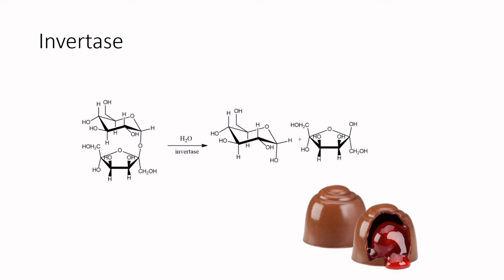Sucrose is a disaccharide, and if we take that disaccharide — which really likes to be crystalline — and break it into its constituent monosaccharides glucose and fructose, which don't like to crystallize, we can take advantage of the Cadbury secret and make fluid centers in chocolates. In a chocolate-covered cherry with a liquid center, you've got crystalline sucrose with just enough water of hydration. Apply invertase and slowly over time the sugar goes from being crystalline into liquid. Invertase is a lot of fun.